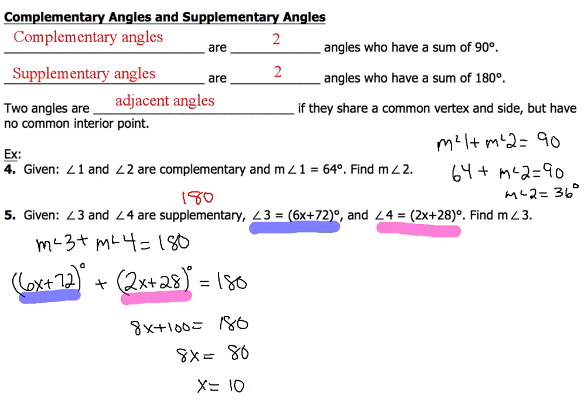Here's what it would look like. So, the first line of our equation is going to be taking the measure of angle 3 plus measure of angle 4 and setting it equal to 180. Now, 6x plus 72 is going to be substituted in for the measure of angle 3, and 2x plus 28 is going to be substituted in for the measure of angle 4.